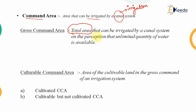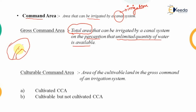If we take the total area that can be irrigated by a canal system on the assumption that unlimited quantity of water is available — that means if you have 1,000 hectares of area and sufficient water, you can irrigate the entire area. However, this area may also consist of different water bodies, houses, or roads, so it is not possible to irrigate those portions and that area has to be subtracted.